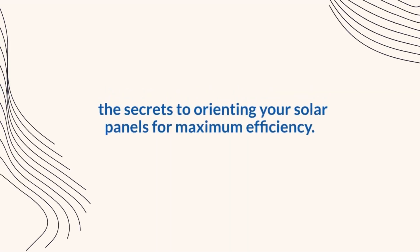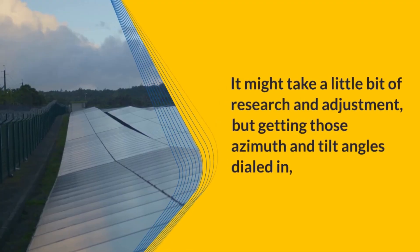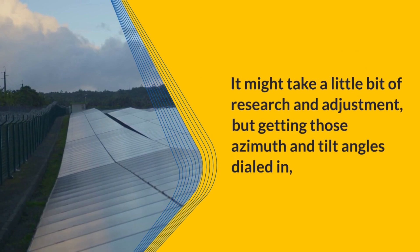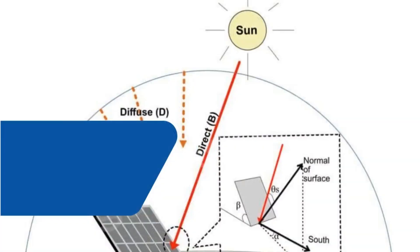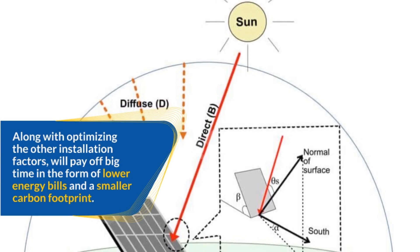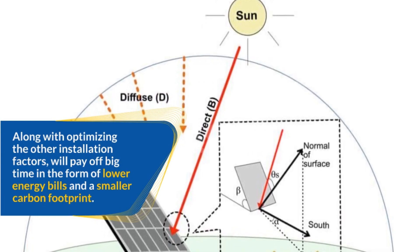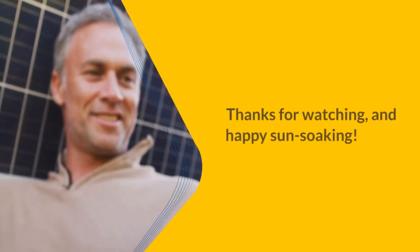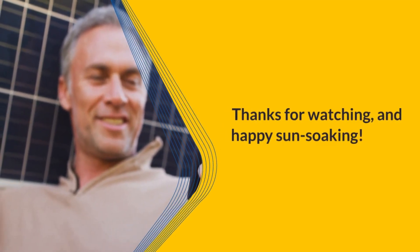There you have it, folks — the secrets to orienting your solar panels for maximum efficiency. It might take a little bit of research and adjustment, but getting those Azimuth and Tilt Angles dialed in, along with optimizing the other installation factors, will pay off big time in the form of lower energy bills and a smaller carbon footprint. Thanks for watching, and happy sun soaking!